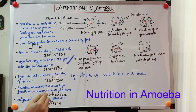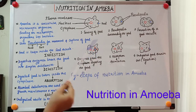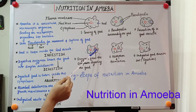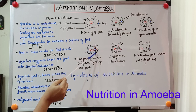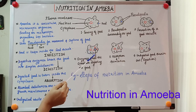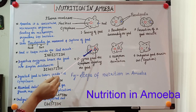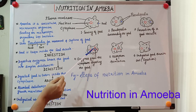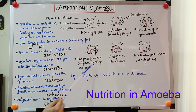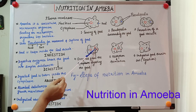The next step after ingestion is digestion. When food has entered the body of amoeba, it is not simple enough for the body to absorb directly. The food needs to be broken down into simple soluble substances so that the body of amoeba can absorb it. This breaking down or digestion of food happens with the help of digestive enzymes secreted by the cytoplasm inside the food vacuole. You can see certain enzymes entering the food vacuole and digesting the food.